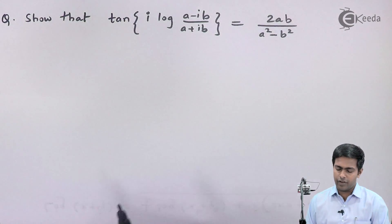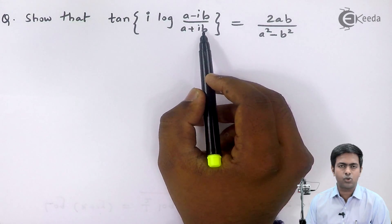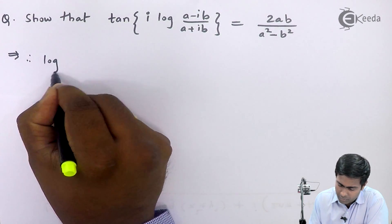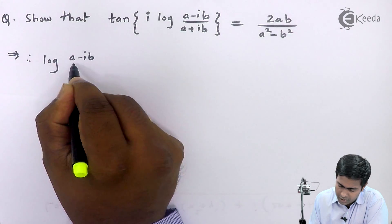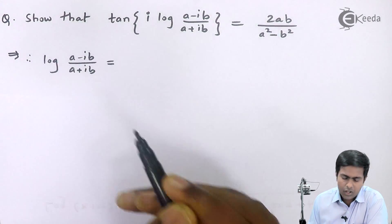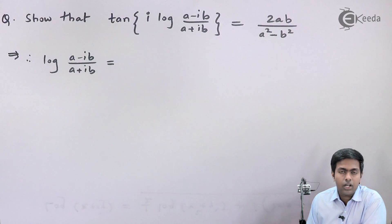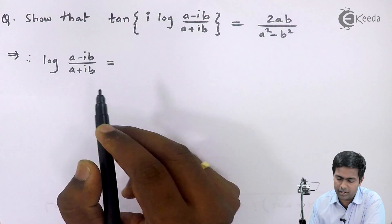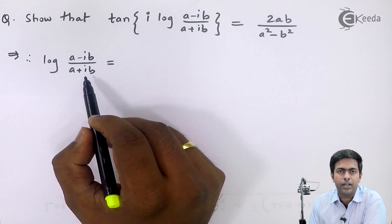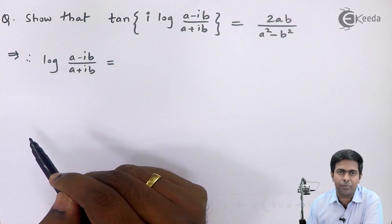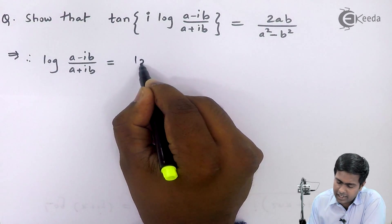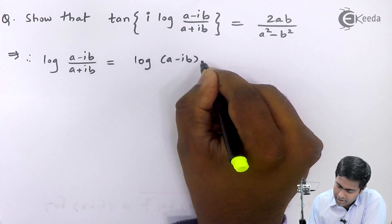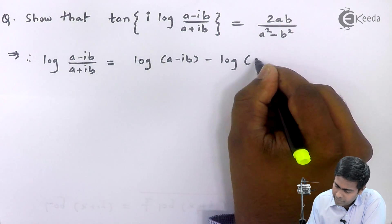So let's start with the logarithm of these two terms. Therefore, log((a − ib)/(a + ib)). To evaluate this I will use the formula log(a/b) = log a − log b, giving us log(a − ib) − log(a + ib).